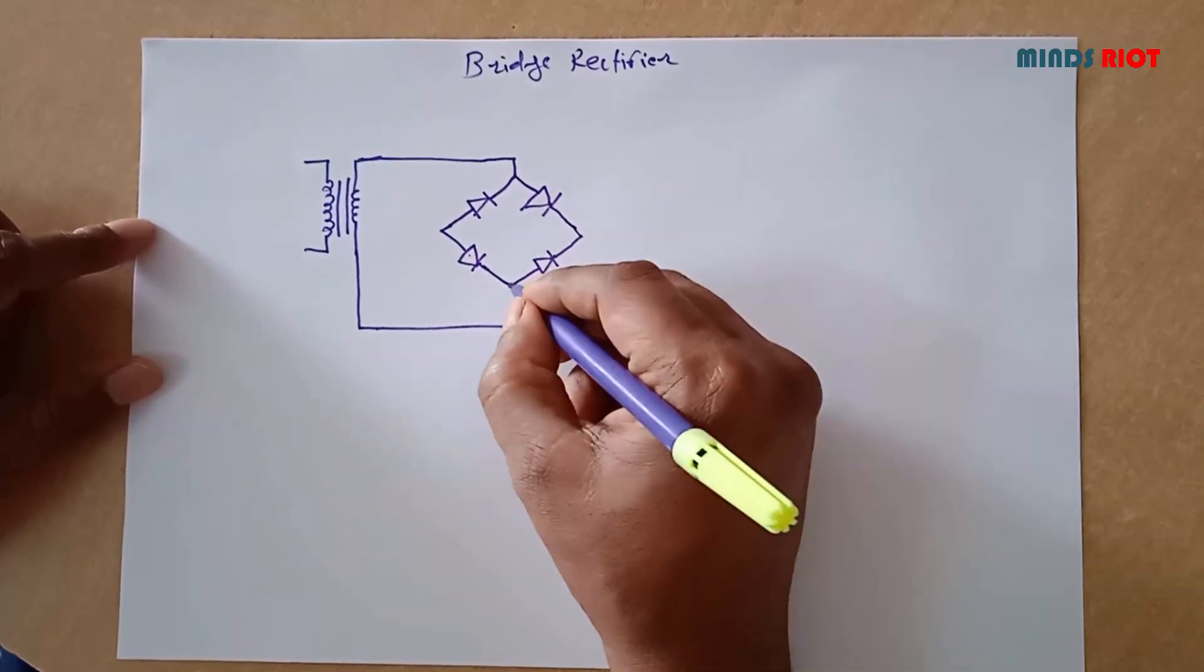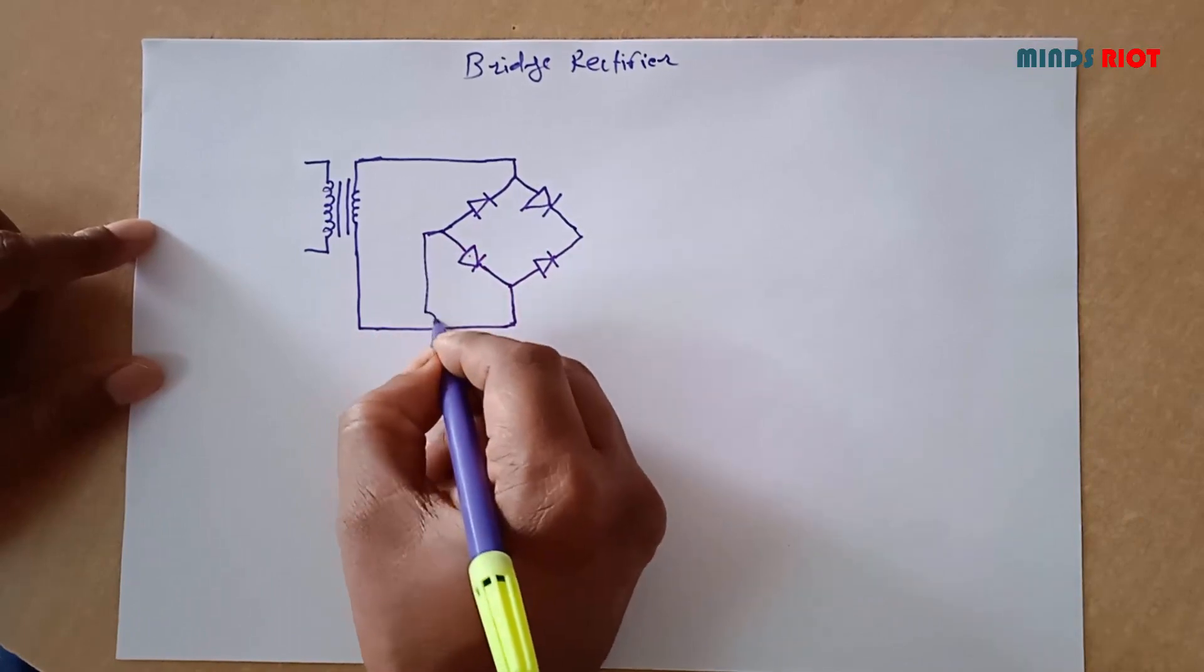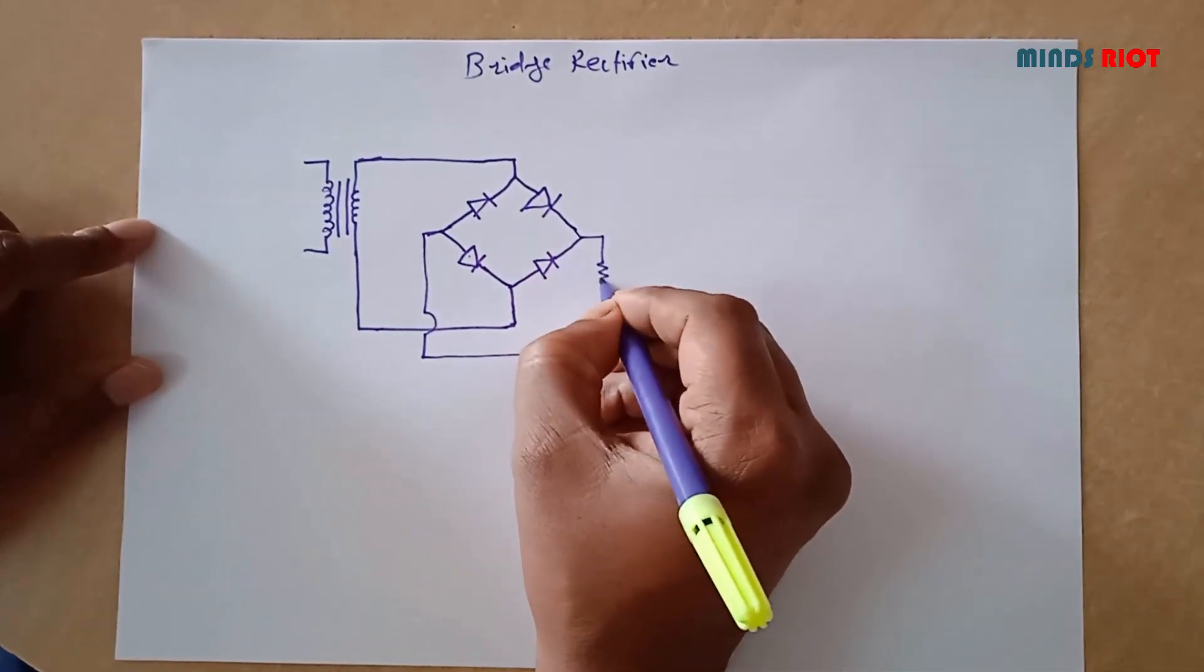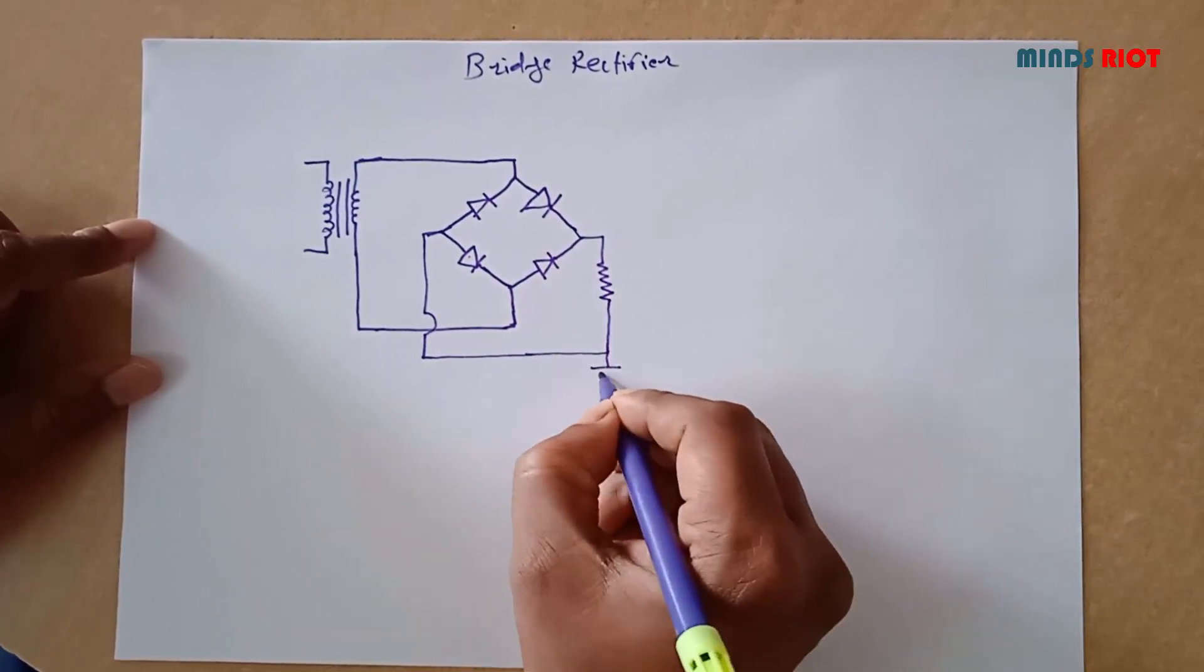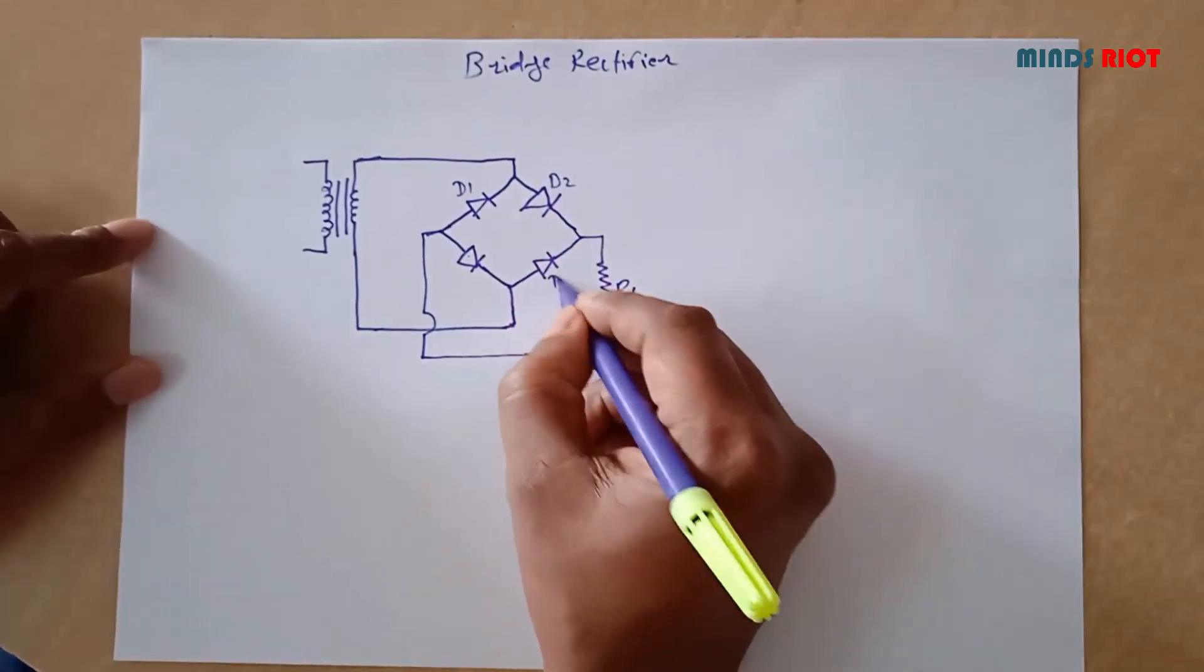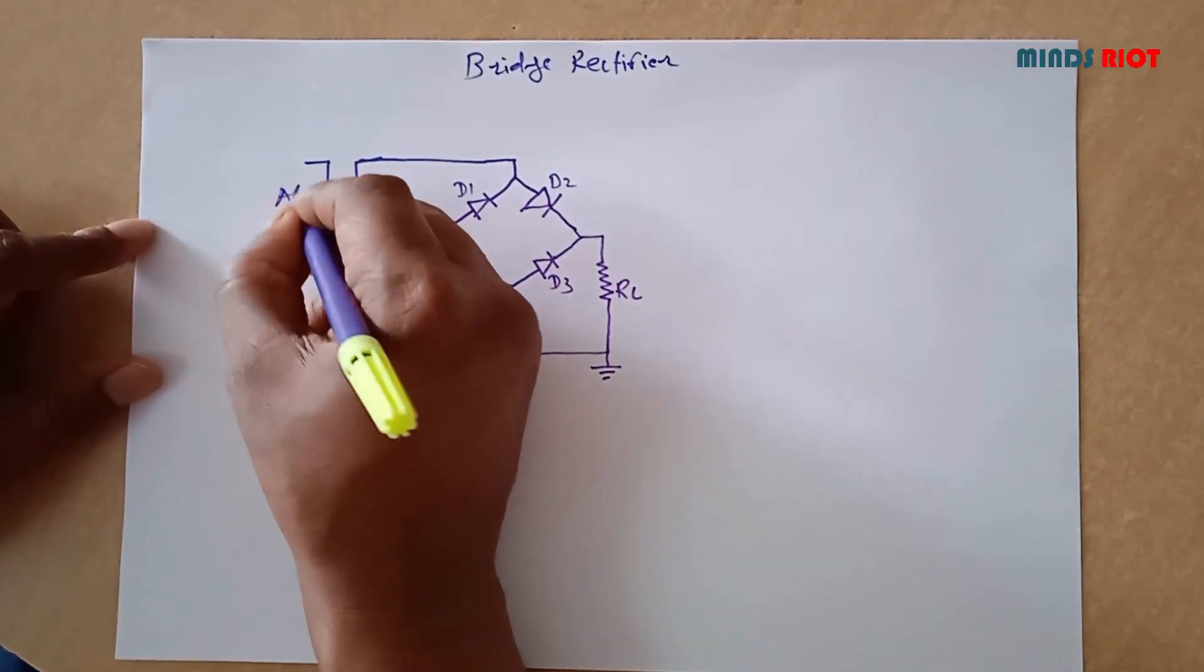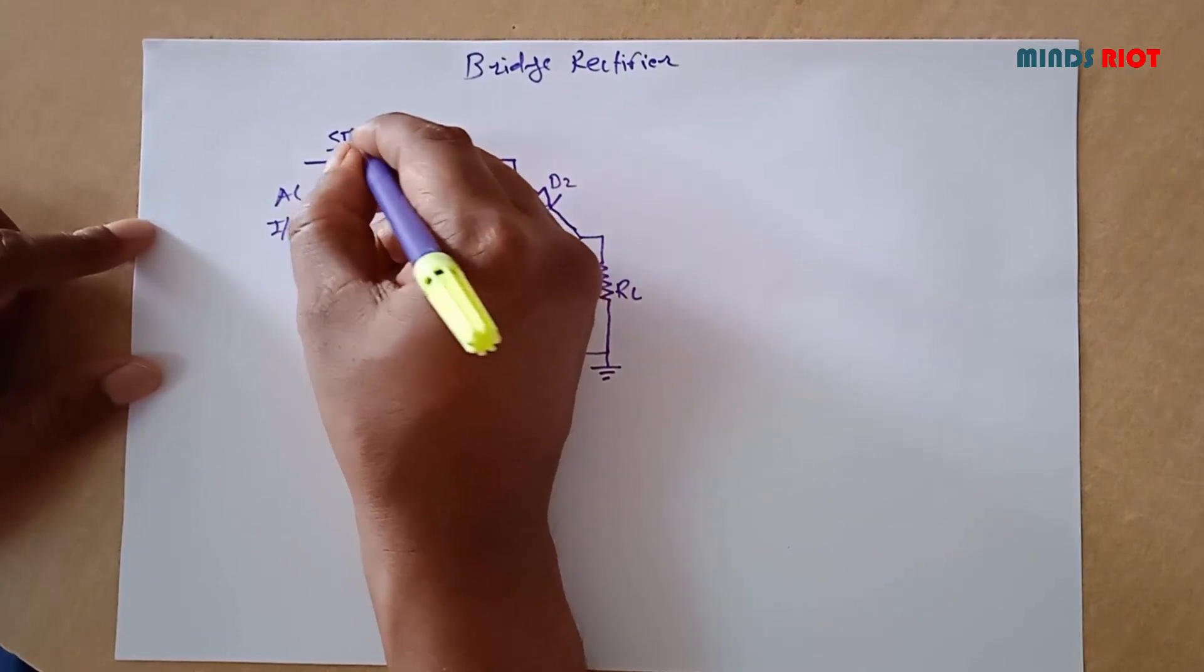This is the conventional diagram with 4 diodes. Now placement of load resistor. Diodes D1, D2, D3, and D4, AC input voltage and step-down transformer.